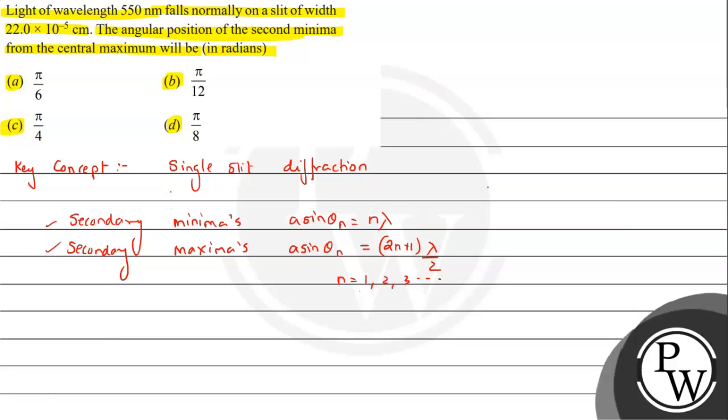Where n starts from 1, 2, 3, and so on. So we need to understand here maxima or minima condition. We have a slit width a, light will be entering, and here θ is representing the angular position of the respective maxima or minima.